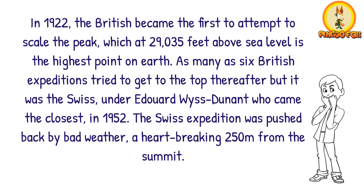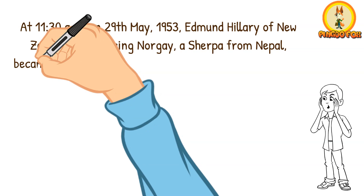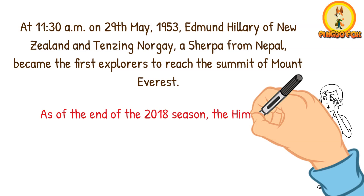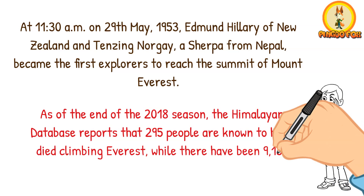At 11:30 a.m. on 29 May 1953, Edmund Hillary of New Zealand and Tenzing Norgay, a Sherpa from Nepal, became the first explorers to reach the summit of Mount Everest. As of the end of the 2018 season, the Himalayan database reports that 295 people are known to have died climbing Everest, while there have been 9,159 successful summit climbs by 5,294 people.